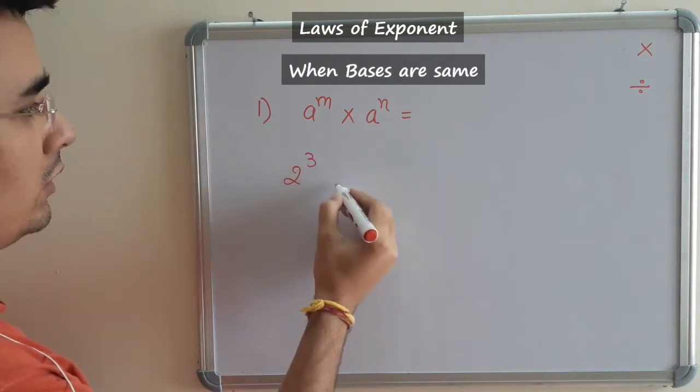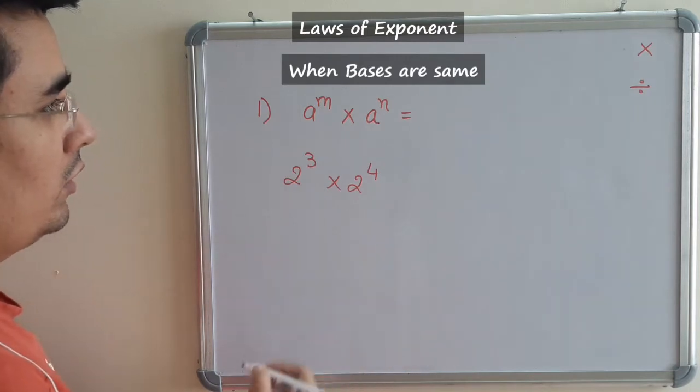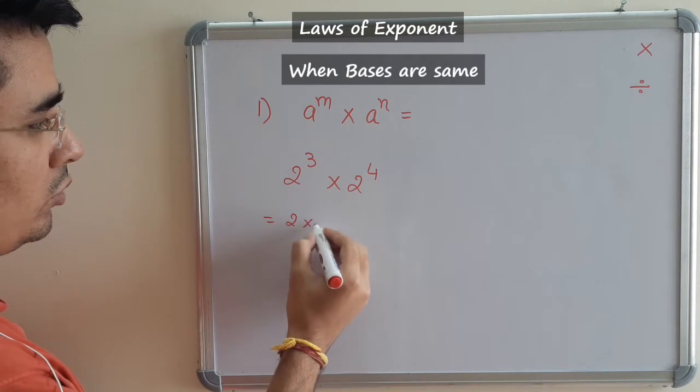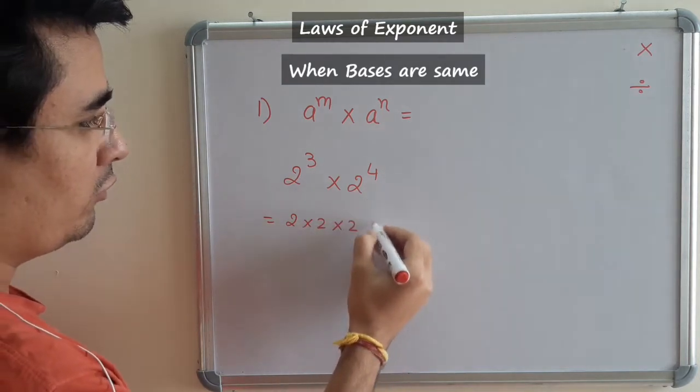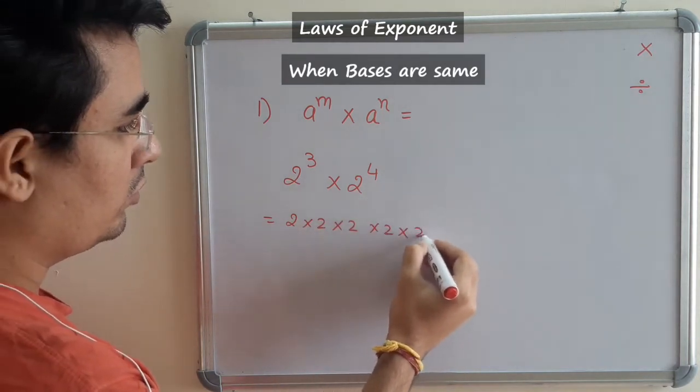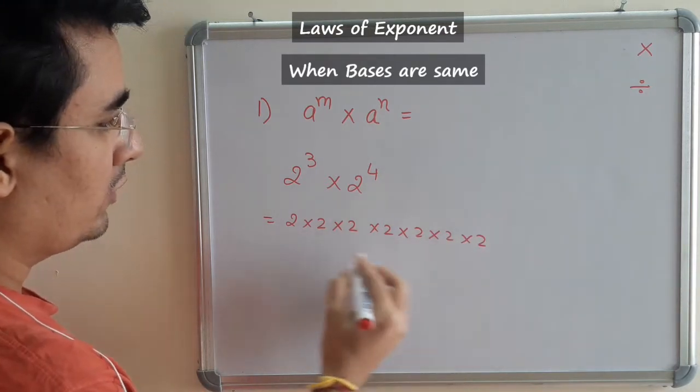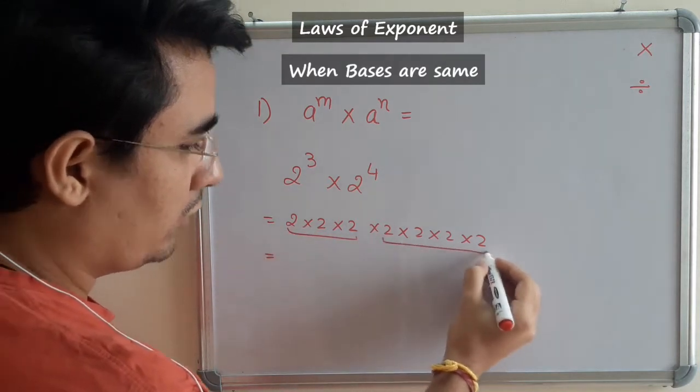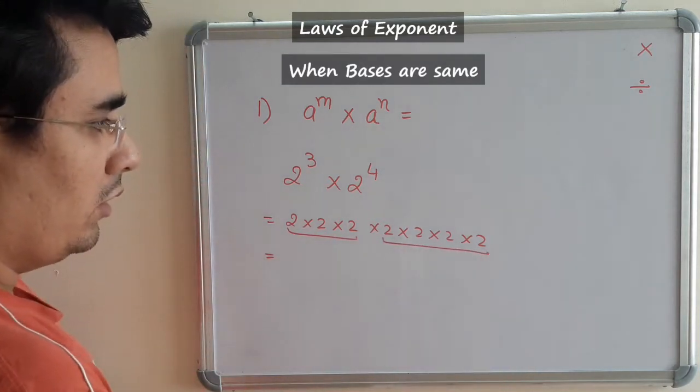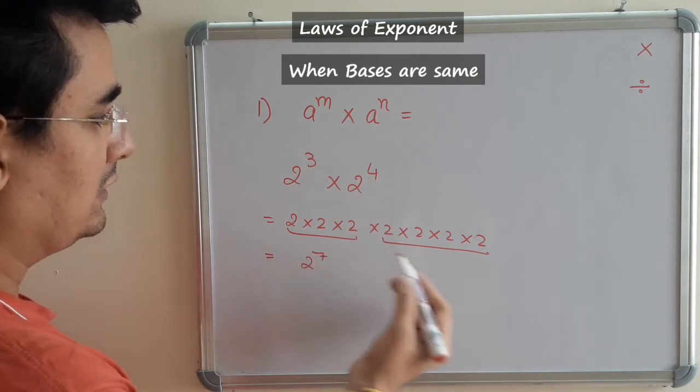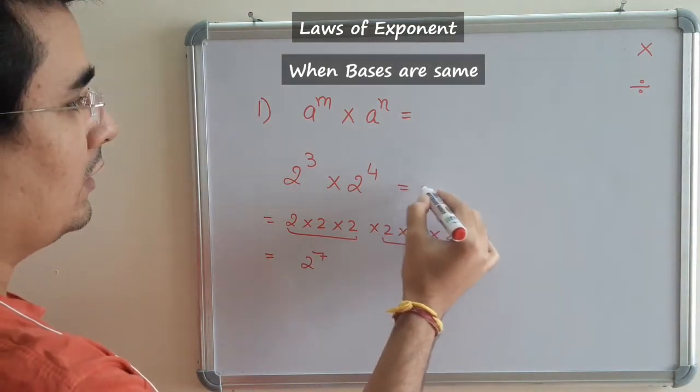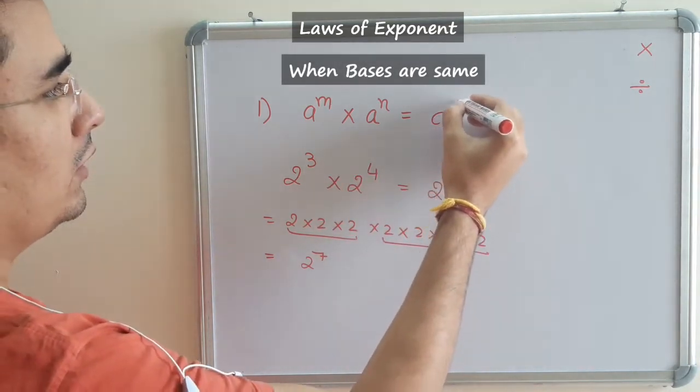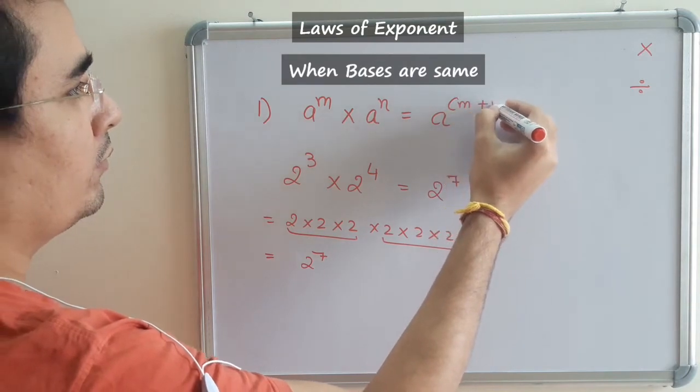Let us take an example: 2^3 times 2^4. We know that 2^3 means 2 × 2 × 2, and 2^4 means 2 × 2 × 2 × 2. In totality we got 3 here and 4 here, so in total we have 2 raised to the power 7. Basically we are adding the power, so the law becomes a^(m+n).